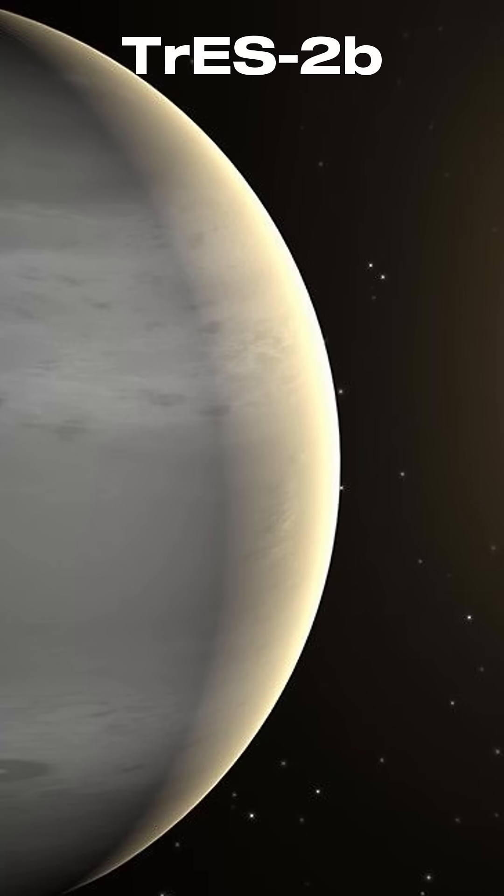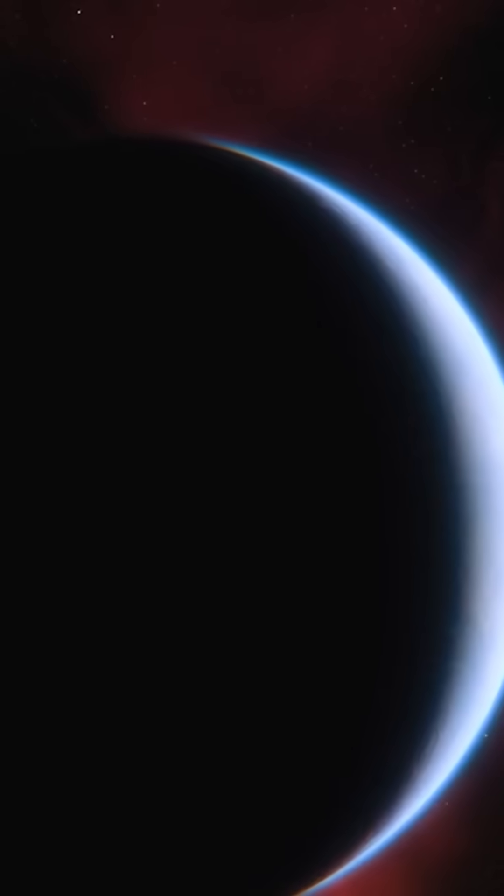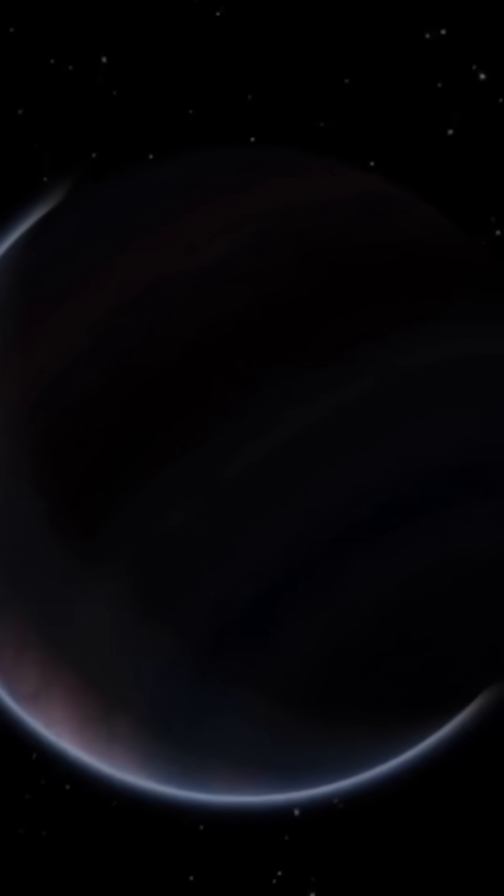Then there is Traeus 2b. It reflects almost no light. It is darker than coal, darker than black paint. If you stood near it, you would not see your own hand. No light bounces off it. Scientists say it may be covered in a thick chemical haze. The planet eats the light that touches it.